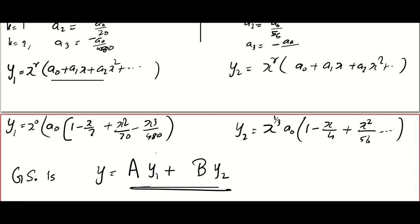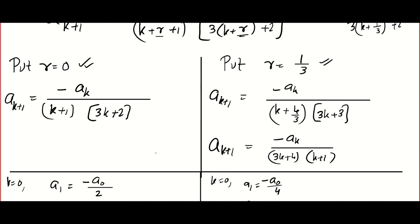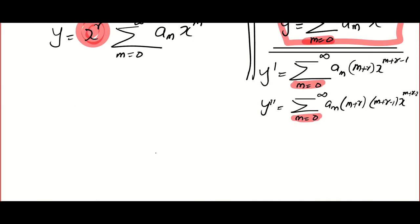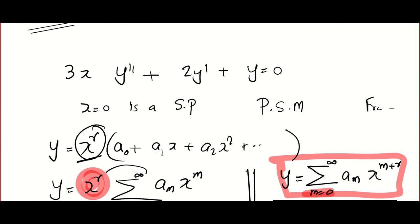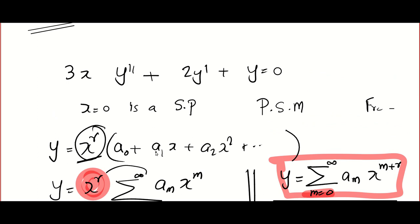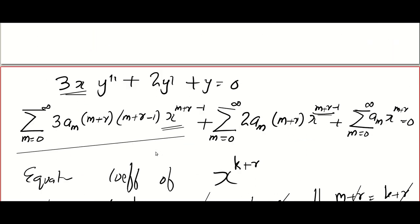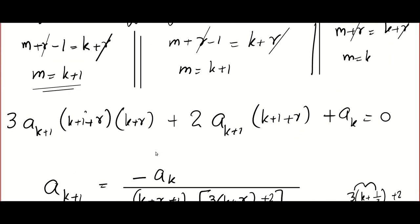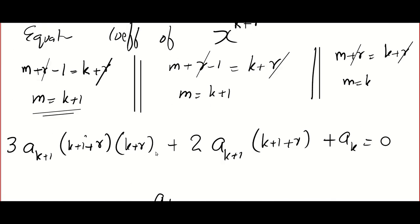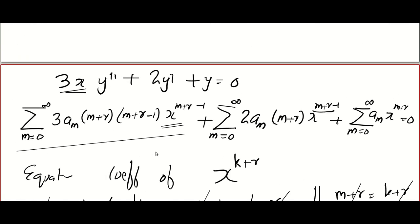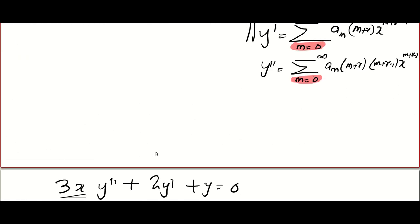So there is a huge difference between the power series method and Frobenius. I did only one type here — the case where the indicial equation gives two distinct roots. There are 3–4 types in Frobenius. I will be back with other videos. Till then, bye friends.